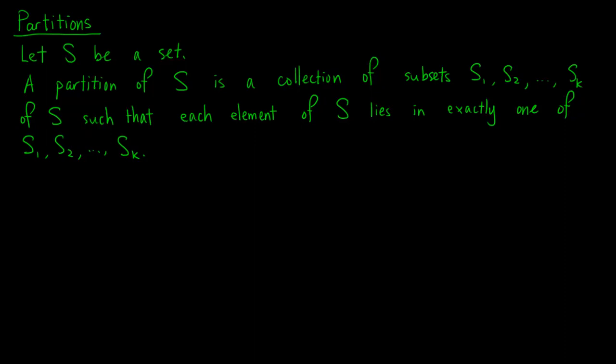First we need to introduce the notion of partitions. Let S be a set. A partition of S is a collection of subsets S1, S2, up to Sk of S, such that each element of S lies in exactly one of S1, S2, up to Sk.